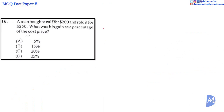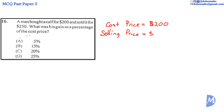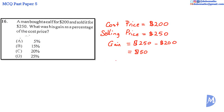Question 16. Cost price is equal to $200. Selling price is equal to $250. The gain, or the profit, is equal to $250 minus $200. We are asked for the gain as a percentage of the cost price. His gain as a percentage is equal to $50 over the cost price, over $200, multiplied by 100%.